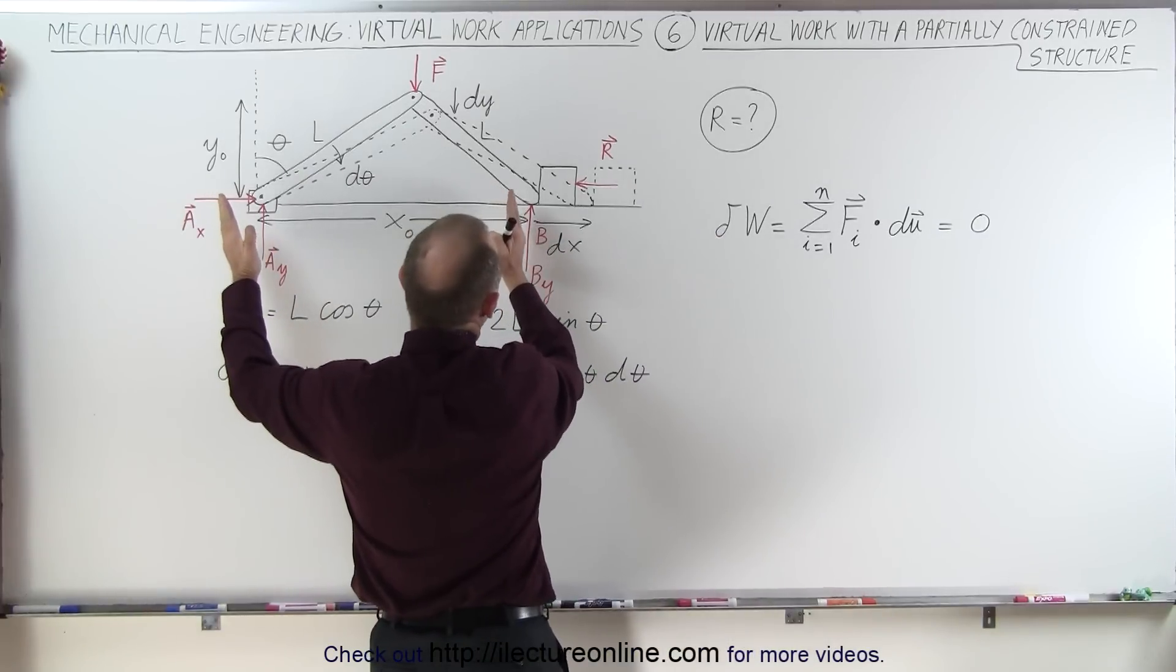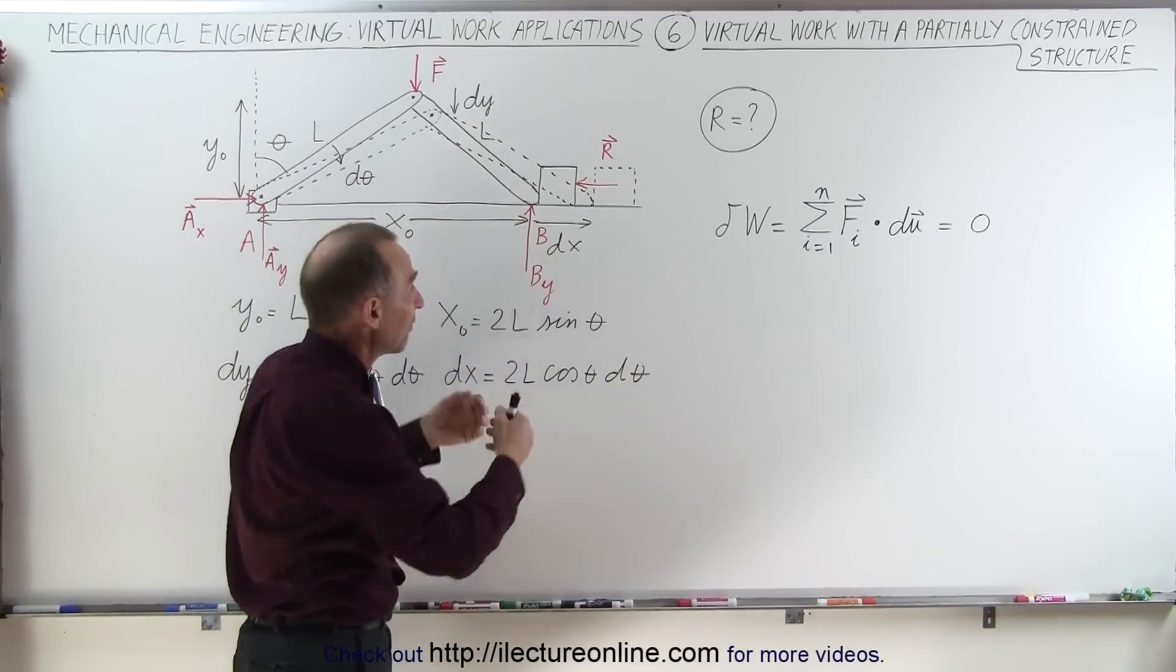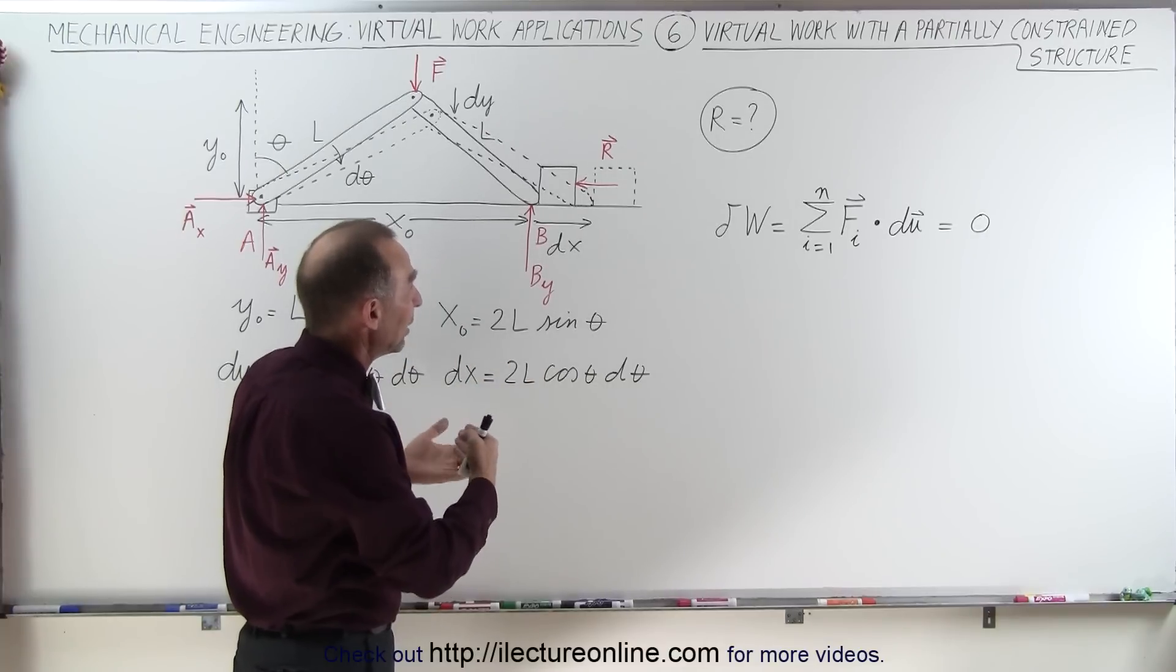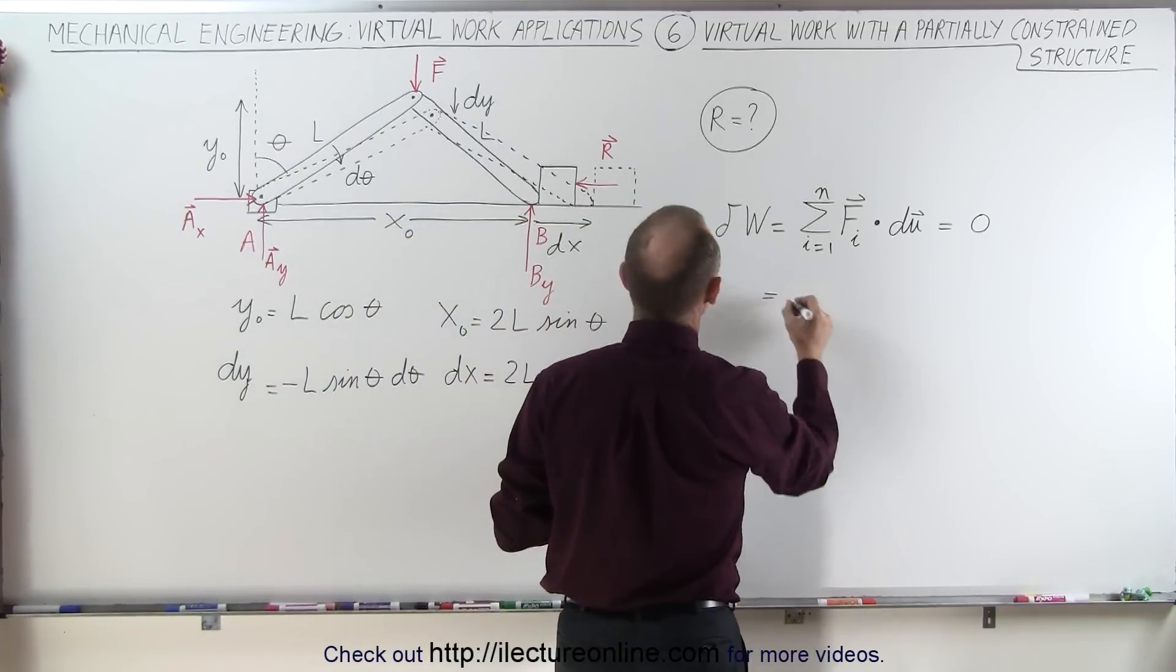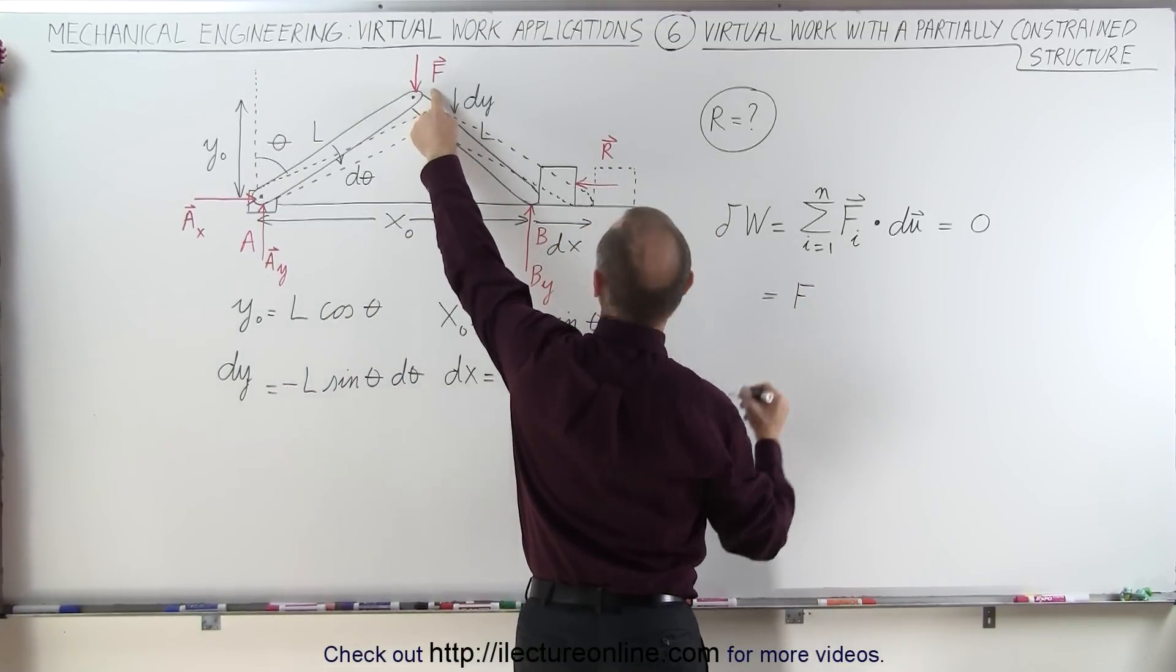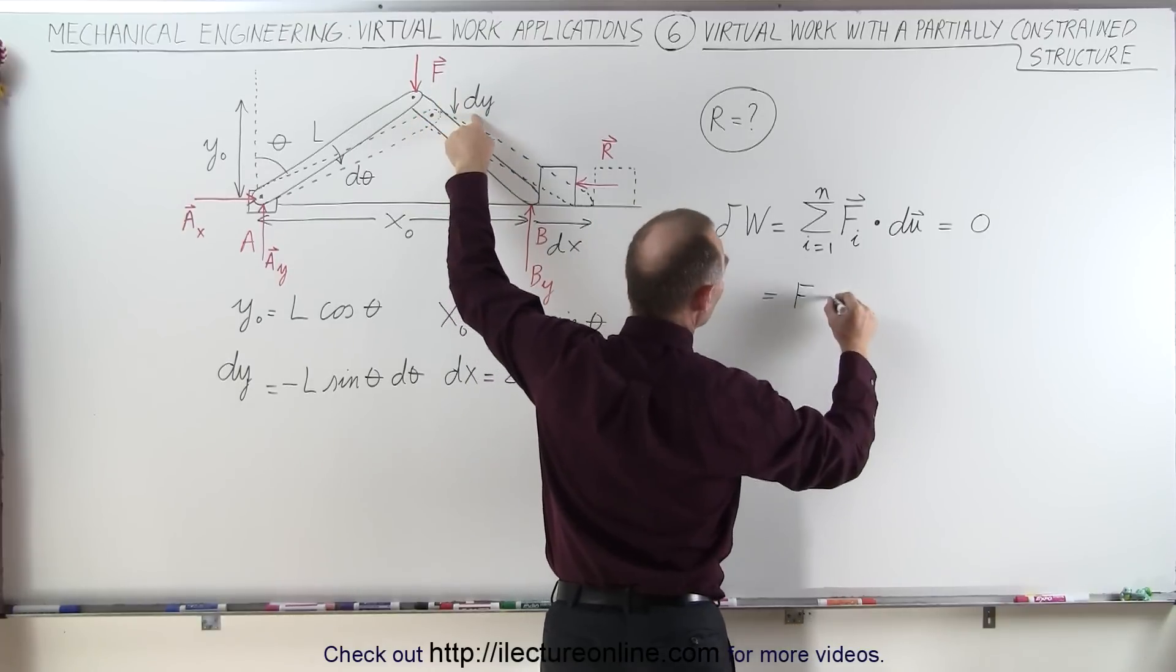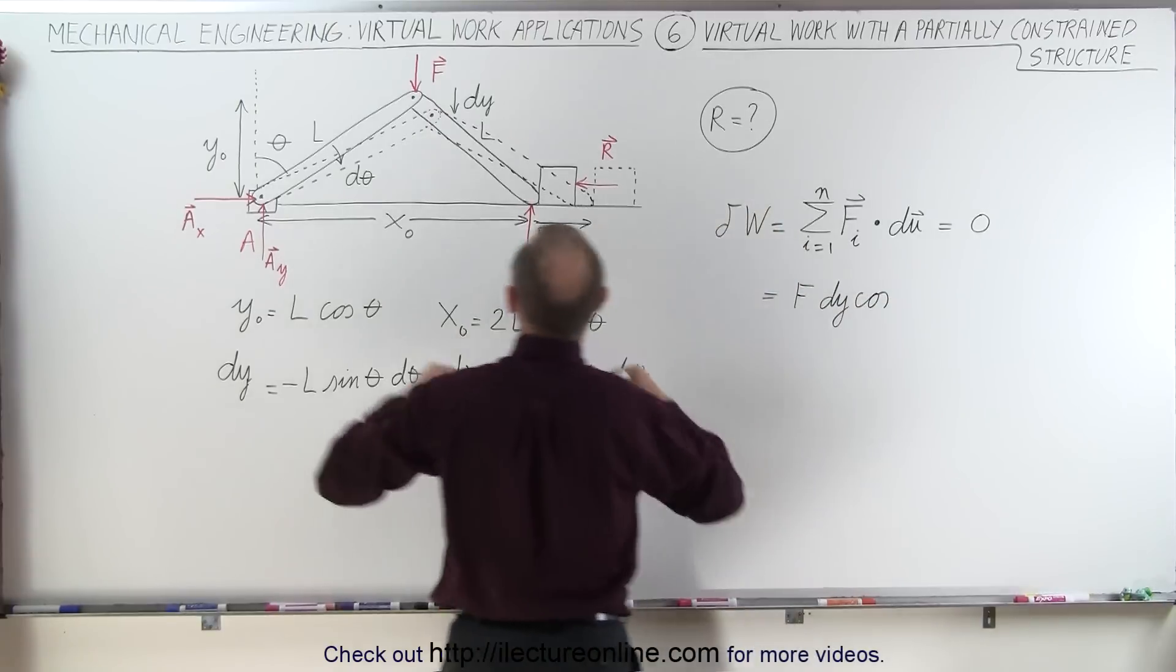And now we're allowing it to do a small amount of virtual work. Of course, virtual work means we have an imaginary displacement, there's really no real displacement, and we're going to calculate the work done by doing so. So this is going to be equal to the force F, the magnitude of that force, times the magnitude of the displacement, dy, times the cosine of the angle between the two.